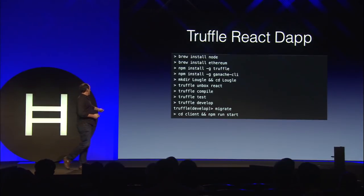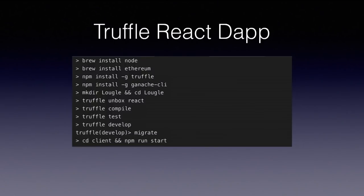To get up and running on a Mac: brew install Node, then install the Go-based Ethereum client, install Truffle and the Ganache CLI. Then create a directory, CD into it, and run 'truffle unbox react' — that gives you a React.js end-to-end decentralized application you can compile, test, and develop on immediately. Change into the client directory, run NPM start, and you'll have a web browser pop up with an application running on a port.